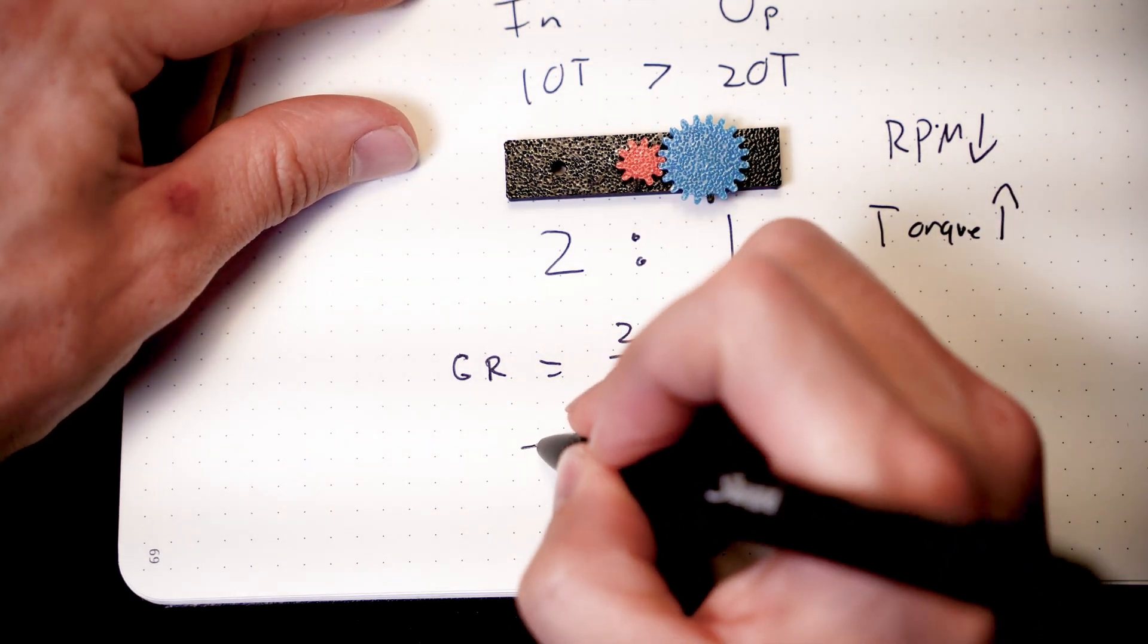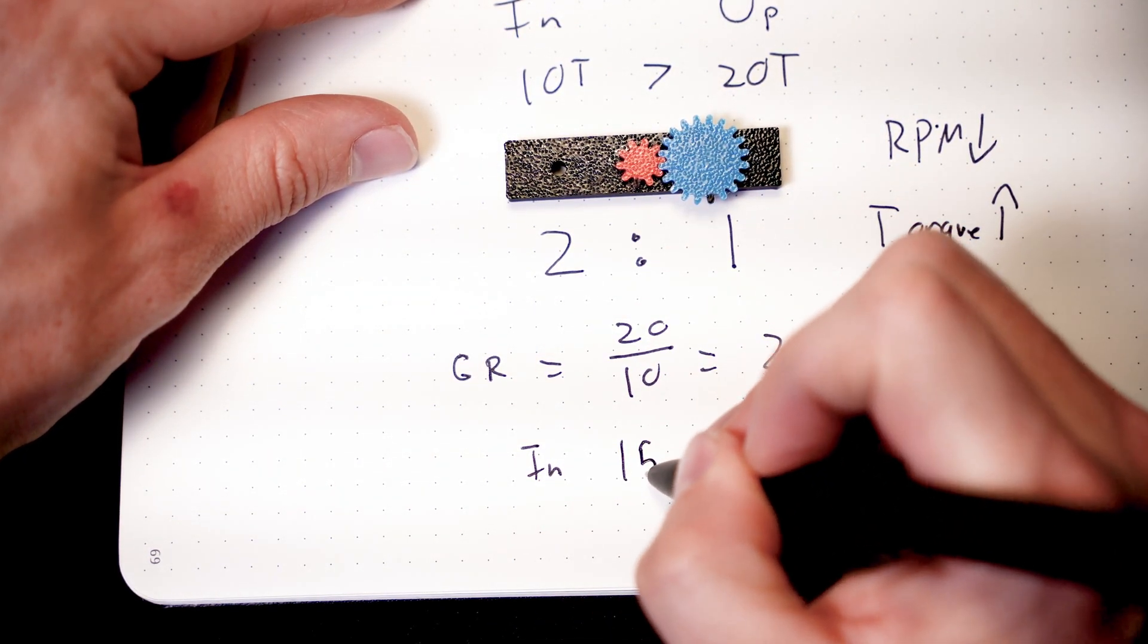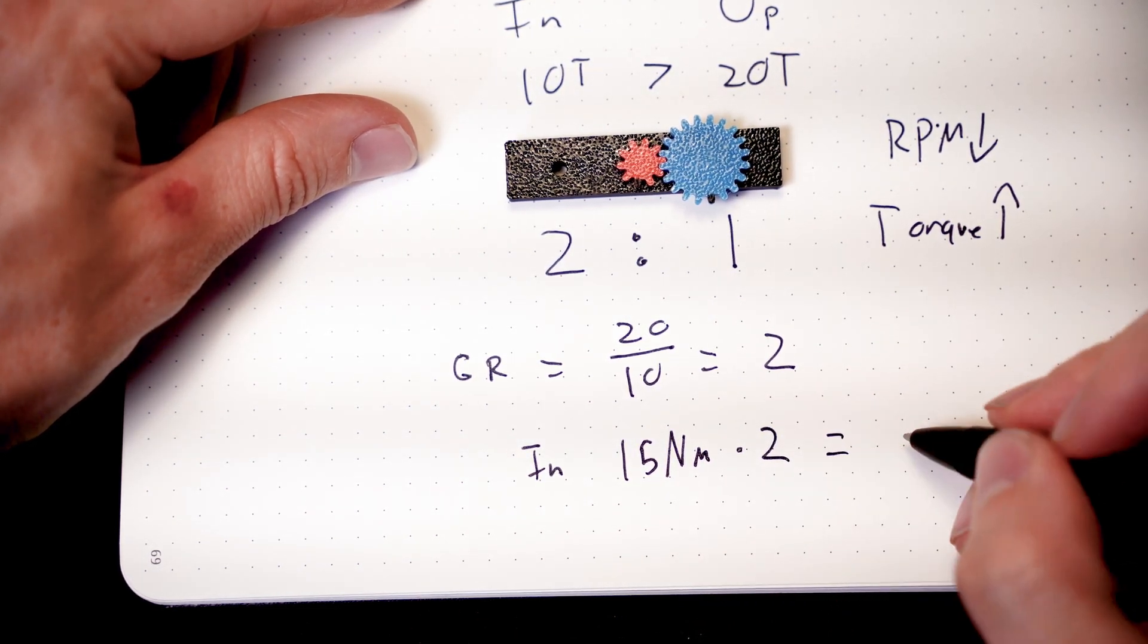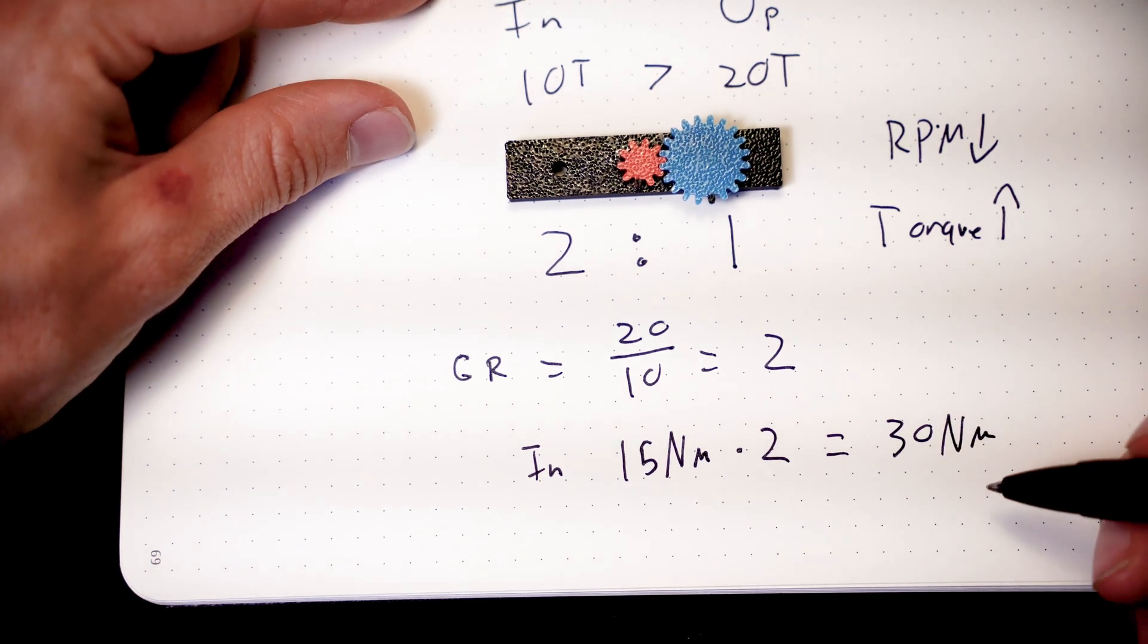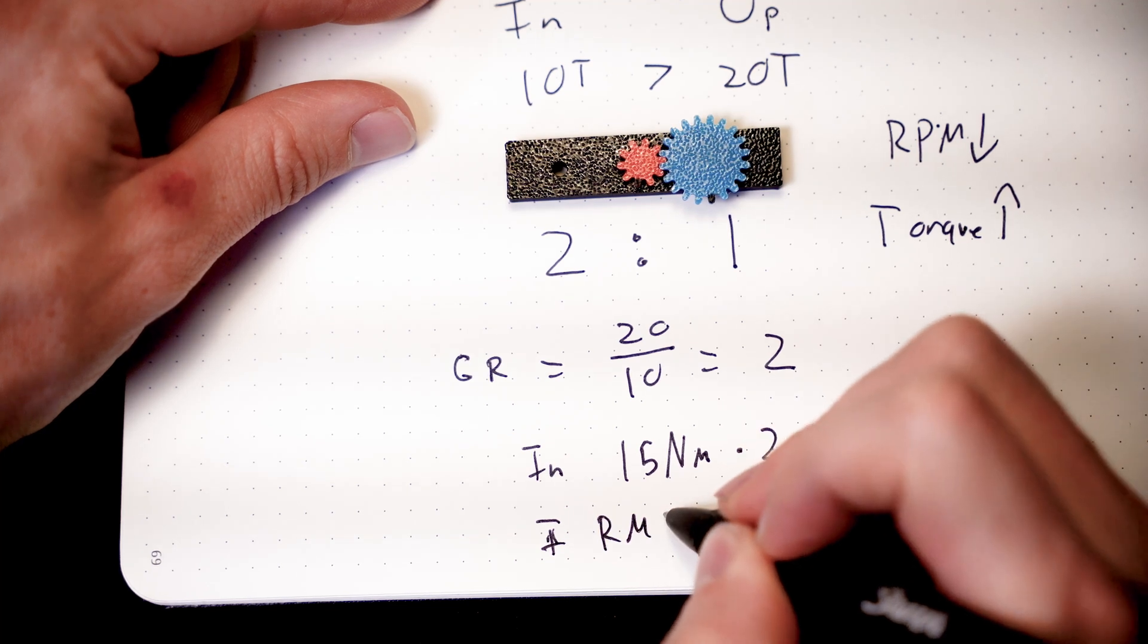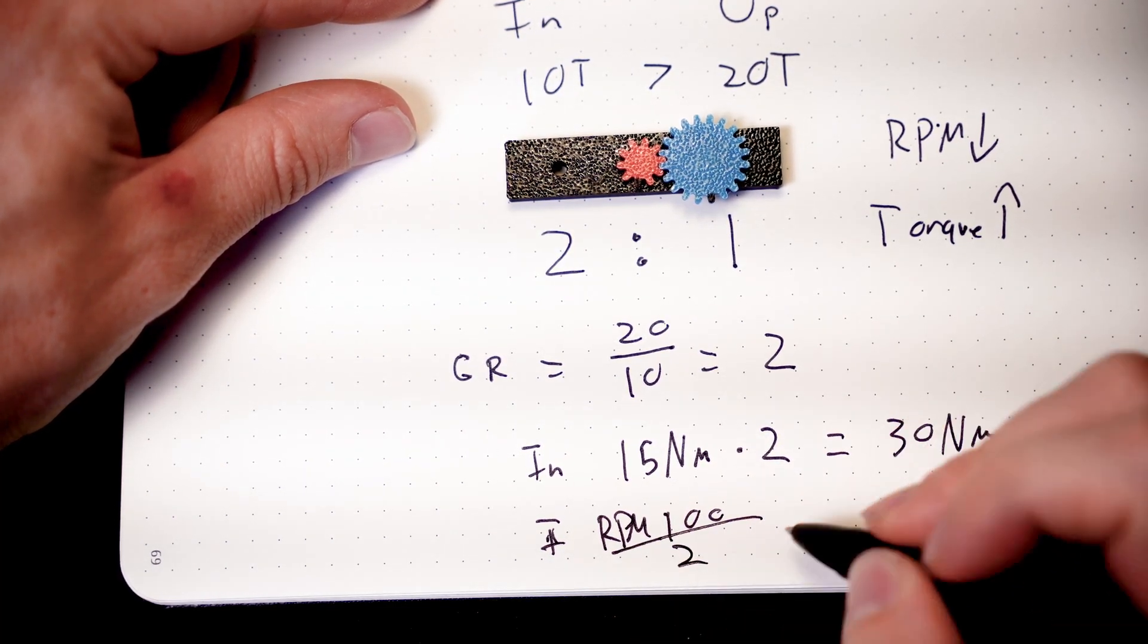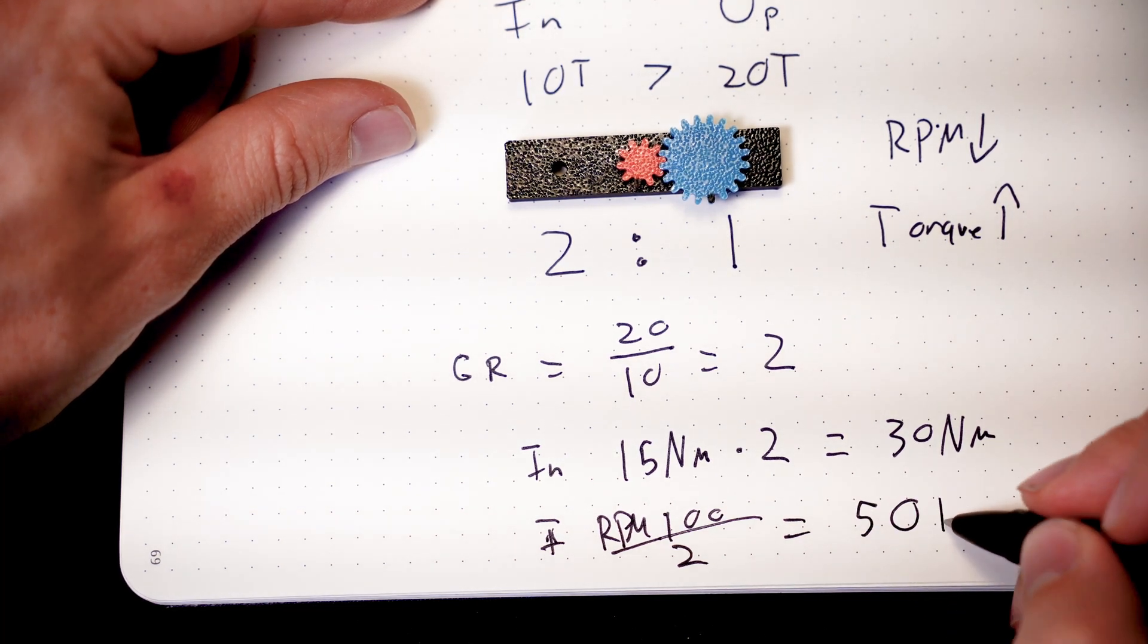So again, using the same example, let's assume that we have an input torque of 15 newton meters. If we multiply that by our gear ratio, we end up with an output torque of 30 newton meters. But if we had that input RPM of 100, we divide that by our gear ratio and we have an output RPM of 50 RPM.